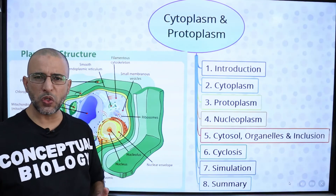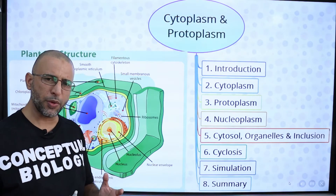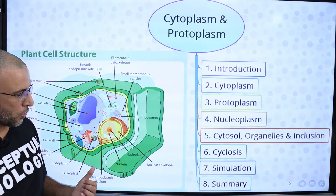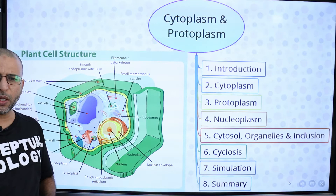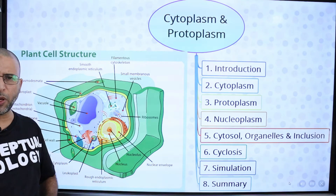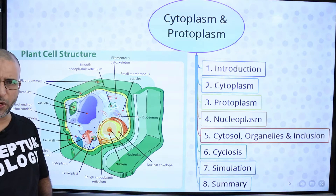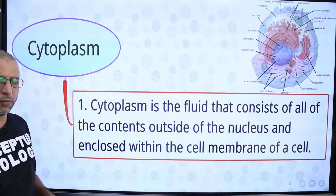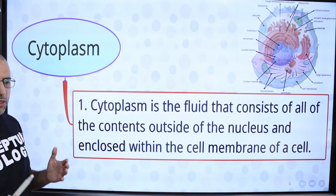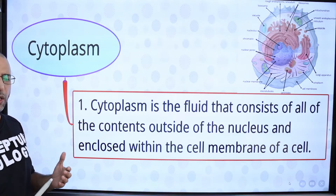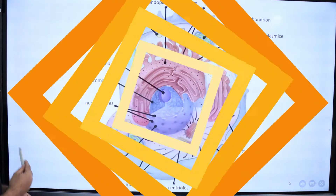Cytoplasm consists of everything present inside the plasma membrane of the cell, excluding the nucleus in a eukaryotic cell. The water in cytoplasm makes up about two-thirds of the cell's weight and gives the cell many of its properties. Cytoplasm is the fluid that consists of all contents outside the nucleus but inside the cell membrane.